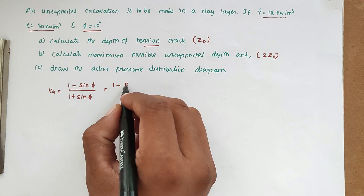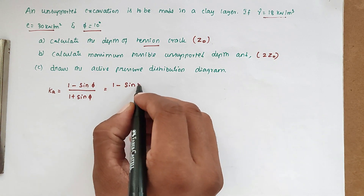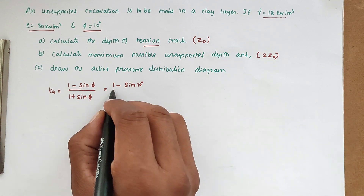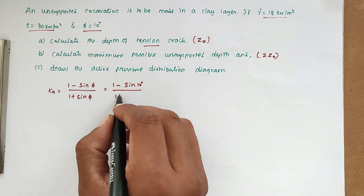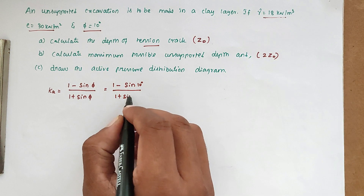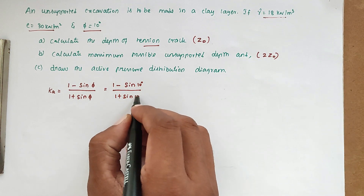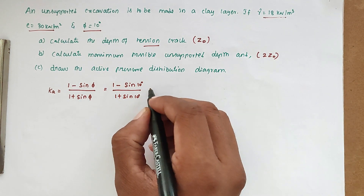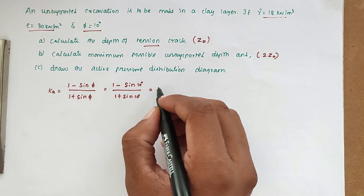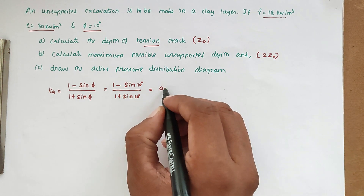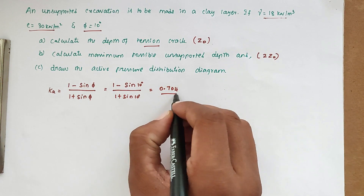Since phi is 10 degrees, we compute Ka = (1 - sin 10°) / (1 + sin 10°), which gives a value of 0.704. This is our Ka value.